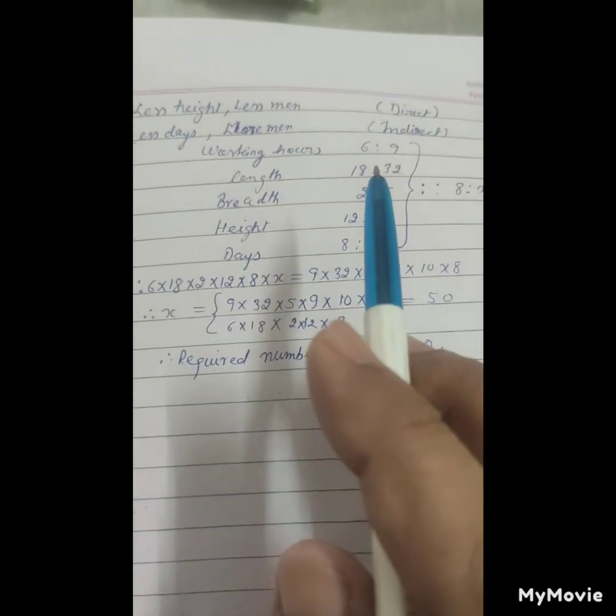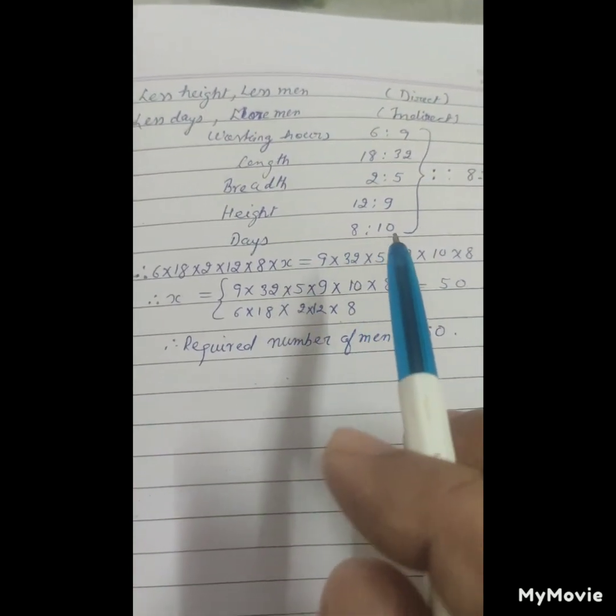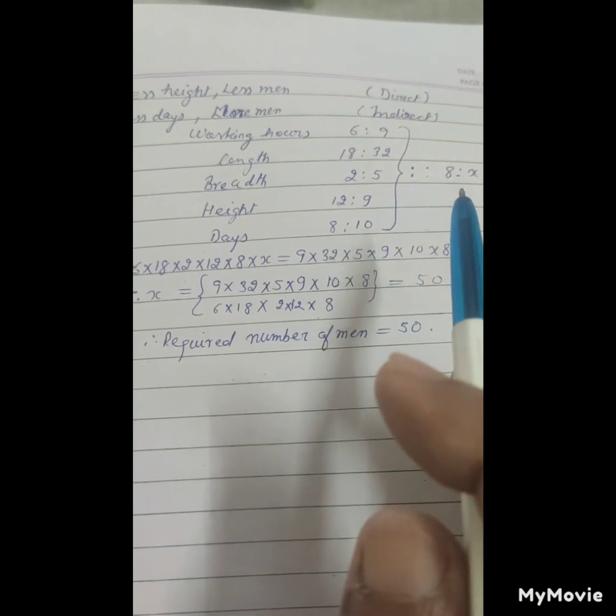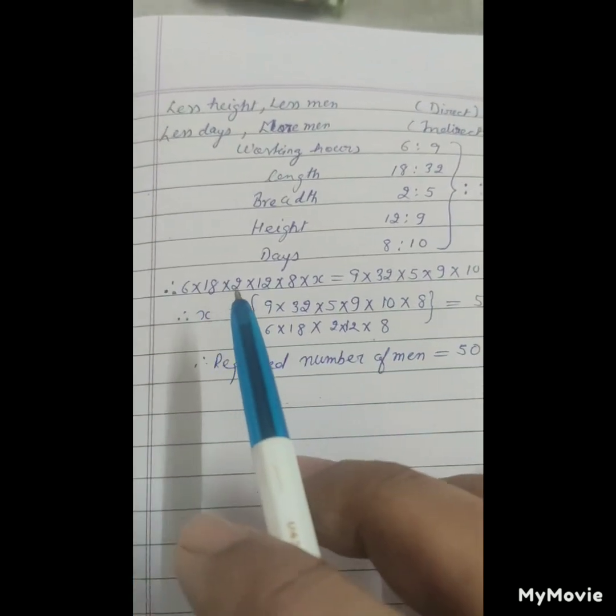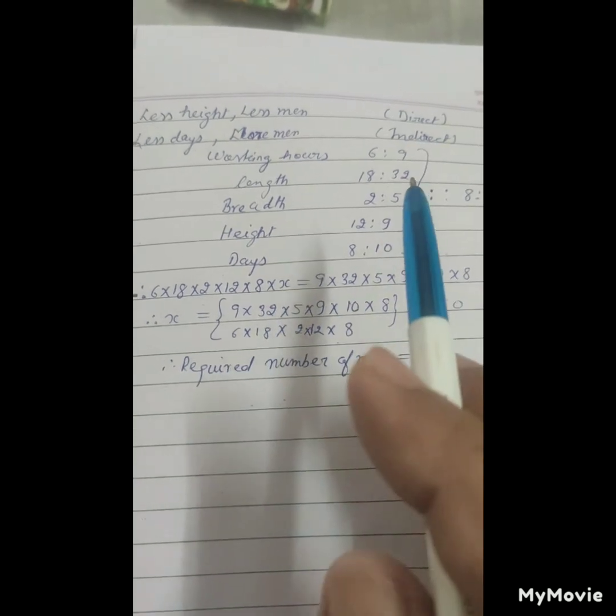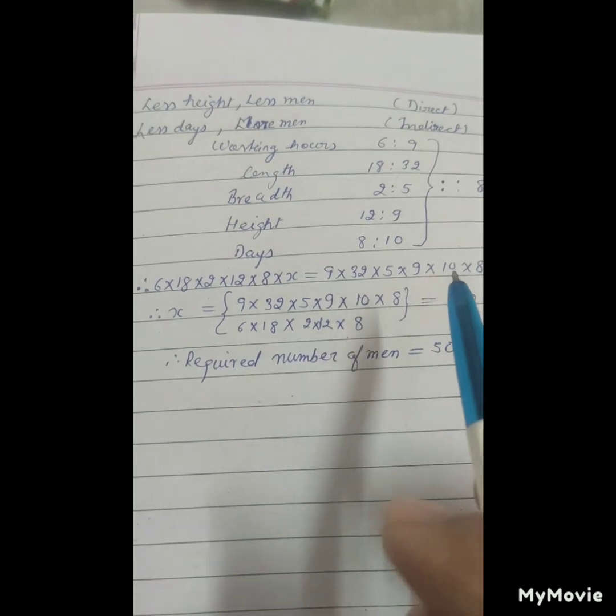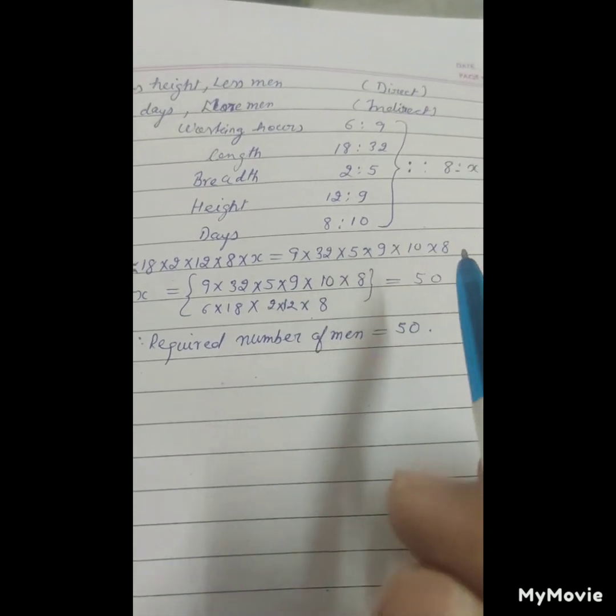So 6 into 18 into 2 into 12, 8 into 8 into 8 into x equals 9 into 32 into 5 into 5 into 9 into 10 into 8.